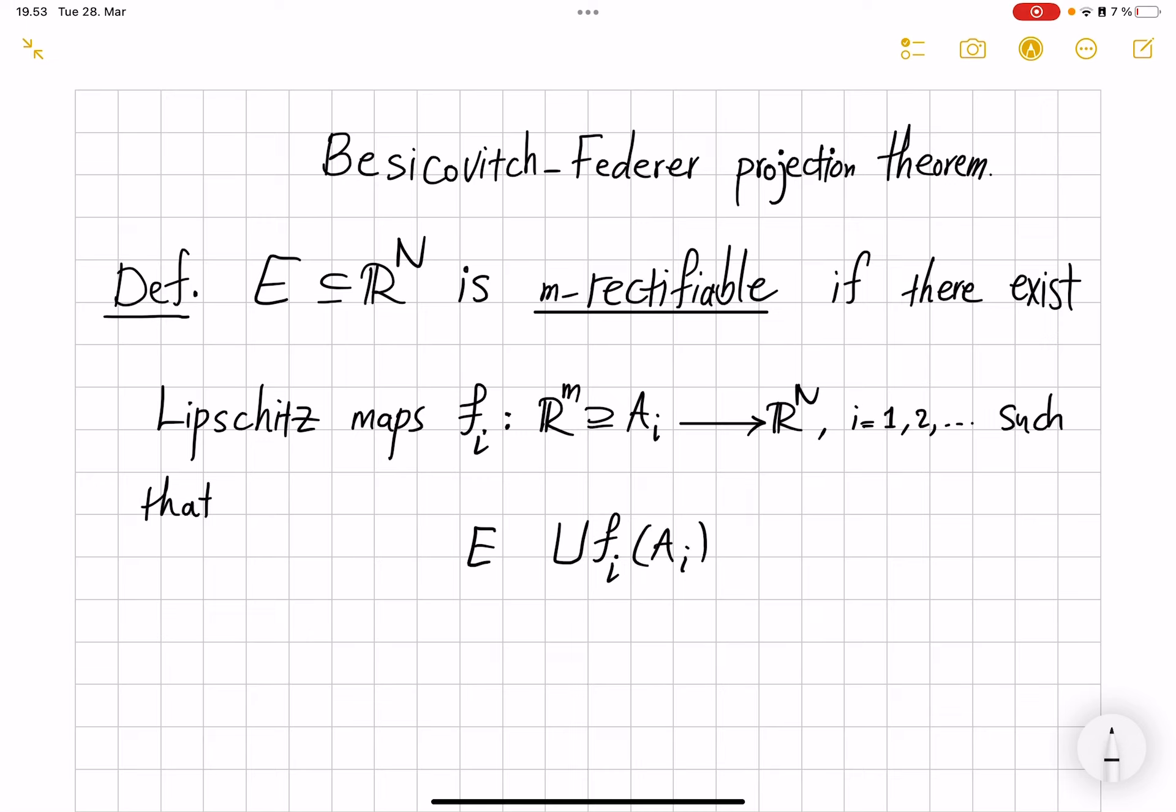So f_i is the function defined on A_i, a subset of R^m. When you take this union over i, E is basically contained in it. That is in the measure language - the part that is not included has negligible measure. H^m here. So that is the definition of an m-rectifiable subset of R^N.